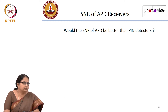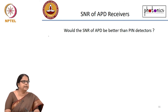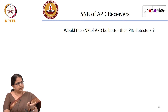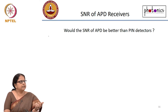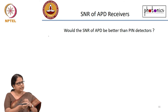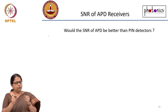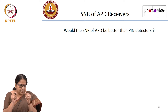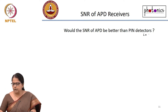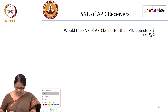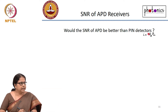What happens with APD receivers? We talked about PIN diode receivers and how to calculate SNR. The key difference between a PIN diode and an APD is multiplication — electronic avalanche multiplication. A reverse voltage creates a high electric field in the detector, causing impact ionization and avalanche multiplication. So the photocurrent becomes R_d × P_in × M, where M is the multiplication factor.